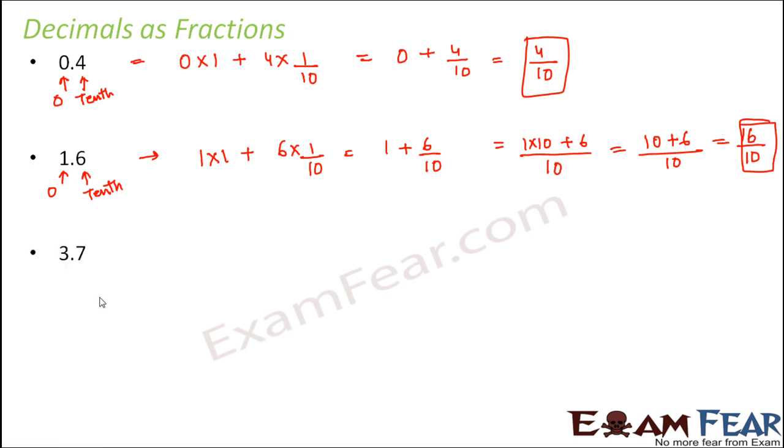One more example: 3.7. So 3.7 can be written as 3 × 1 + 7 × 1/10. This would be equal to 3 + 7/10.